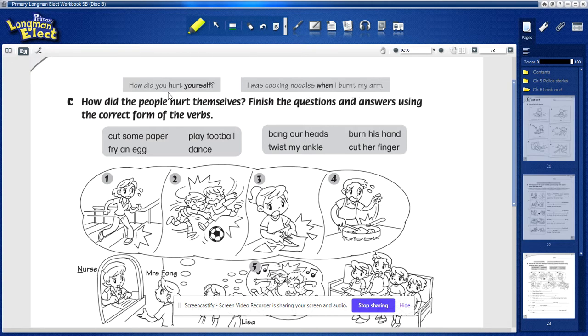So hurt yourself - the subject is you and you turn it into yourself with a reflexive pronoun. You want to write down one past continuous tense: what were you doing? And when you hurt yourself, how did you hurt yourself?